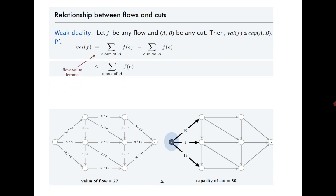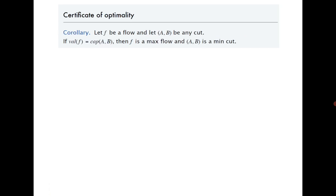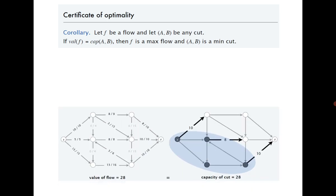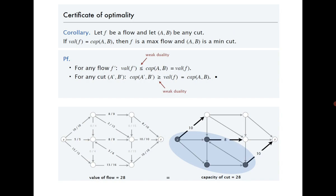The next result we discussed in the last class says: let f be any flow and A-B be any cut. If the value of the flow equals the capacity of A-B, then f must be the maximum flow and A-B must be a minimum cut. This can be proved easily.